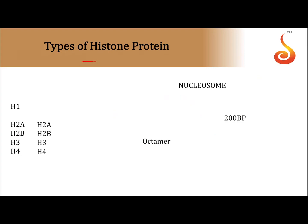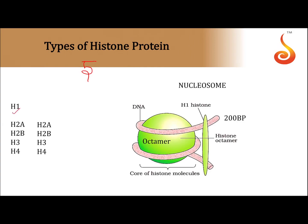Histone proteins are classified into five types: Histone 1, Histone 2A, Histone 2B, Histone 3, and Histone 4. So totally, five types of histone proteins are present.